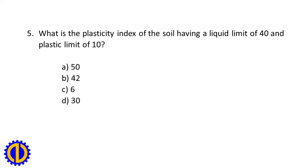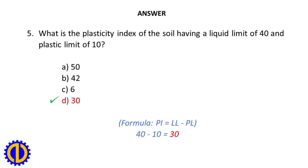Question 5. What is the plasticity index of the soil having a liquid limit of 40 and plastic limit of 10? A. 50. B. 42. C. 6. D. 30. Answer: D. 30. Formula: PI equals LL minus PL. 40 minus 10 is equal to 30.